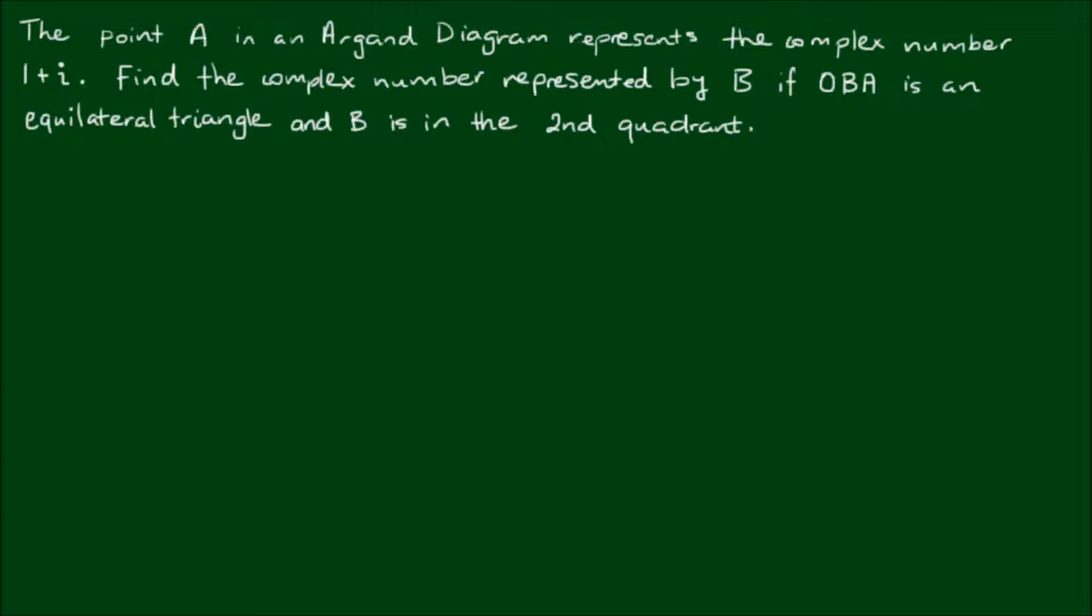The point A in an Argand diagram represents the complex number 1 plus i. Find the complex number represented by B if OBA is an equilateral triangle and B is in the second quadrant.